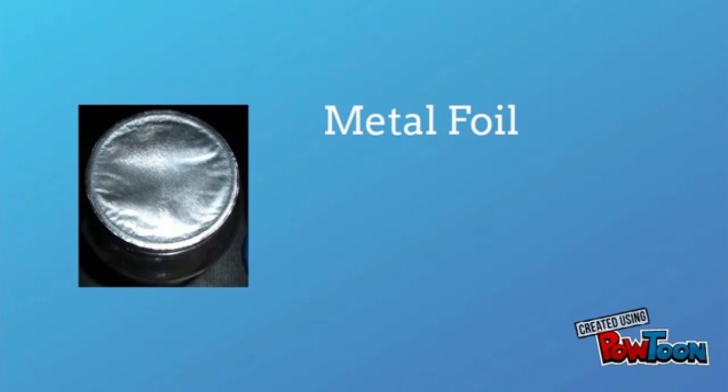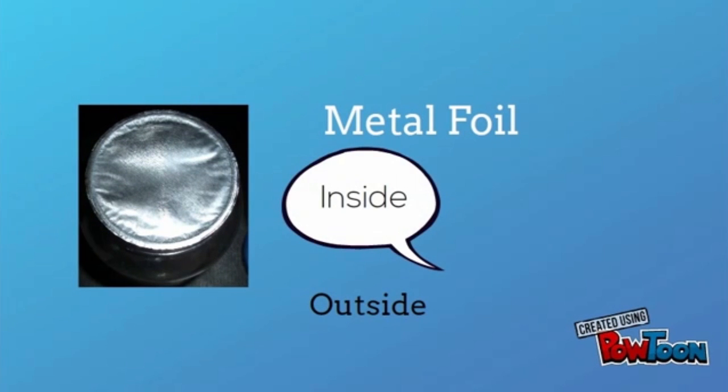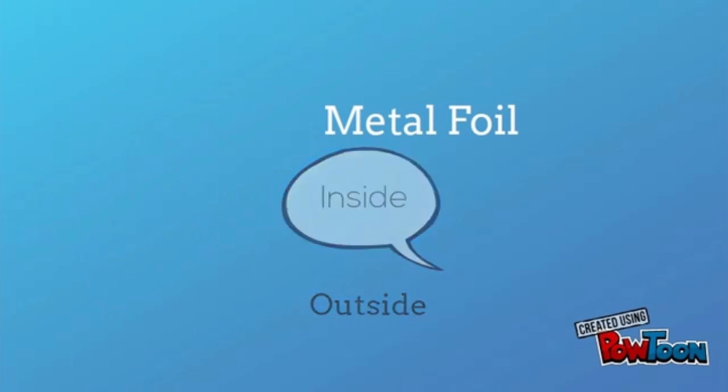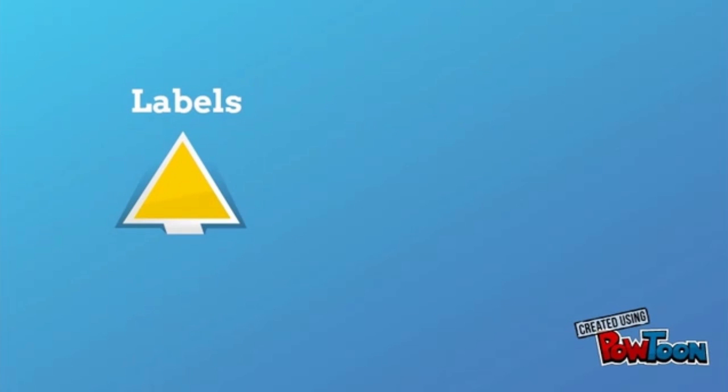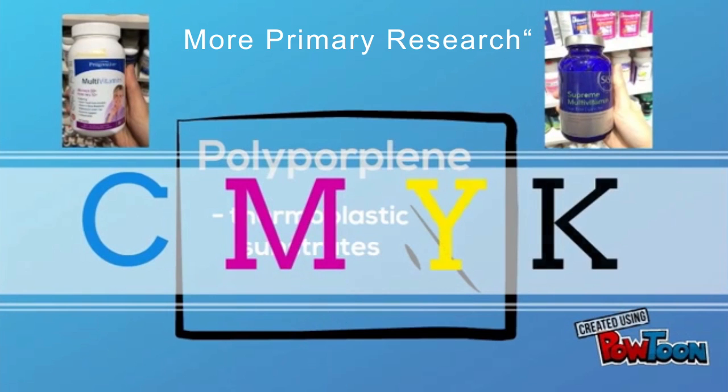Furthermore, aluminum foil is a material inside and or outside of the bottle that is mounted onto the mouth of the bottle and sealed using induction heating. The label substrates are distinctly different from the bottle substrate. Polypropylene labels are made up of thermoplastic substrates. The color is transferred onto the label using an extreme heating process.